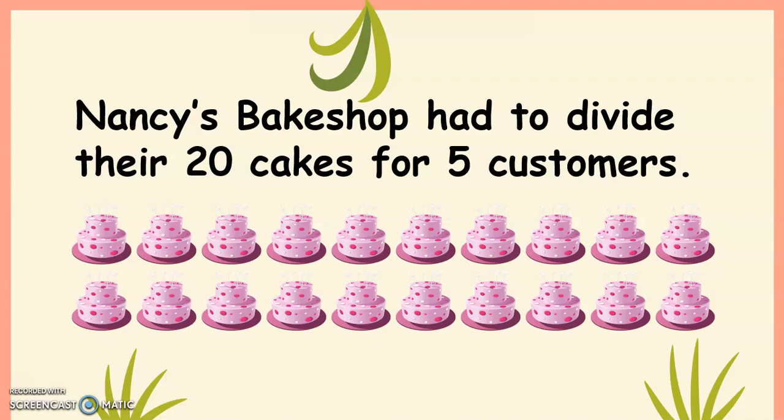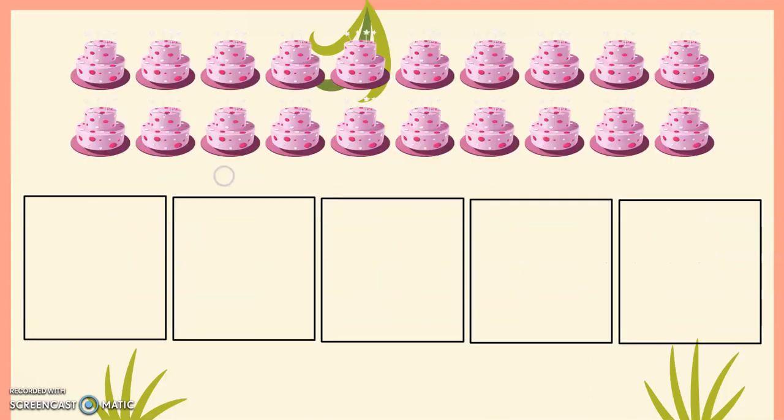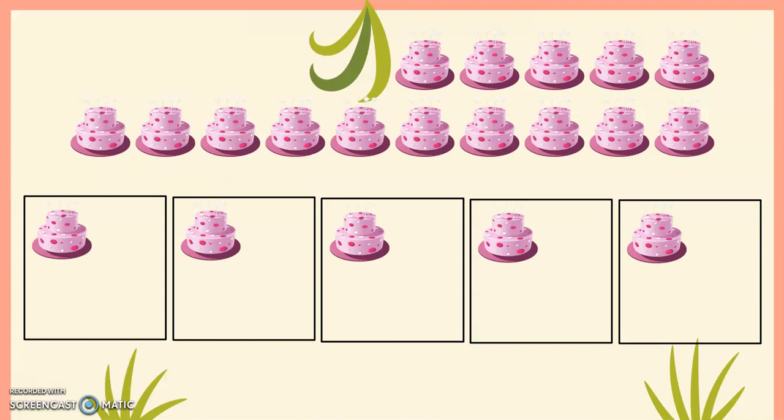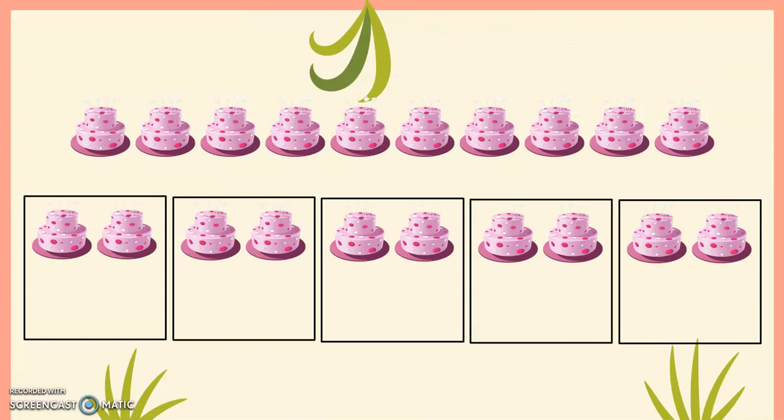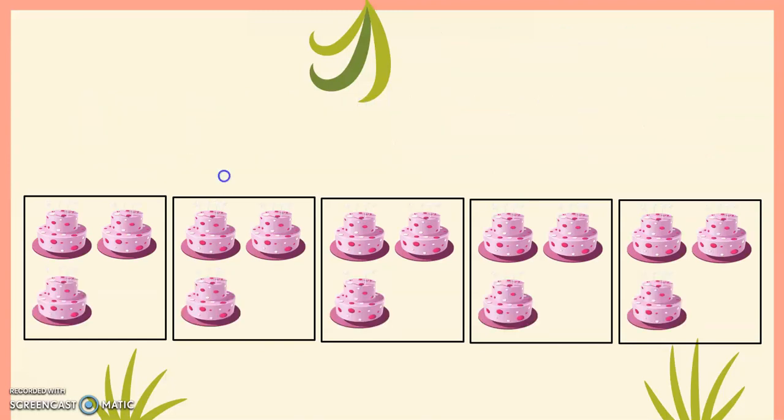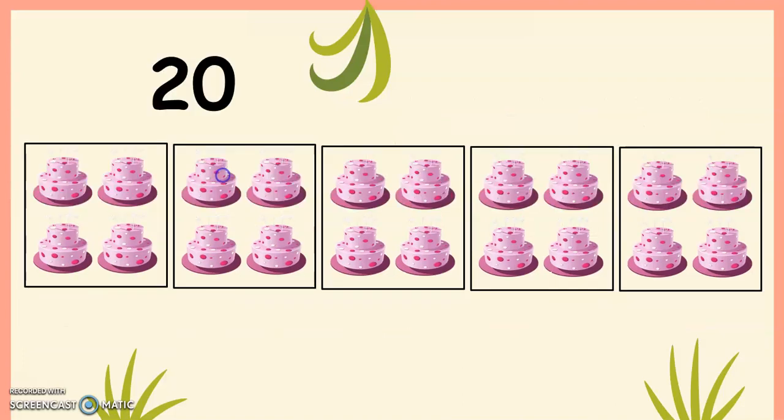Remember, Nancy's Bake Shop had to divide their 20 cakes for 5 customers. Each customer will get 1, 2, 3, and 4. We may now say that 20 divided by 5 equals 4.